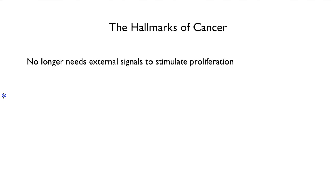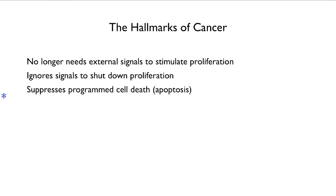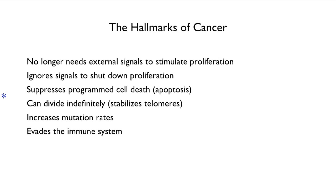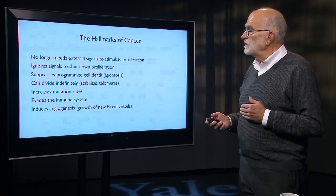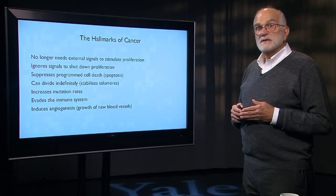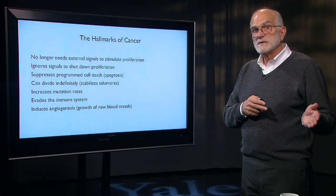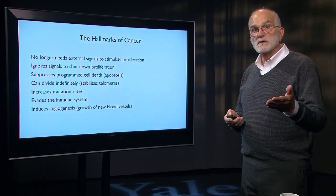However, all cancers have certain hallmarks — they share a suite of traits. They no longer need any external signal to stimulate their growth and proliferation. They ignore signals to stop proliferating. They suppress programmed cell death, so they will not commit suicide by apoptosis. They can divide indefinitely and stabilize their telomeres. They have increased mutation rates, evade the immune system, and induce angiogenesis — the growth of new blood vessels. Interestingly, some of these characteristics are ones we might want to see in other cells if we wanted to live longer, but we don't want to see them in cancers.